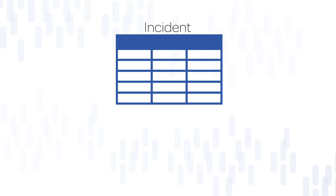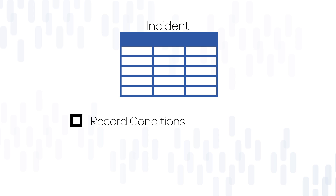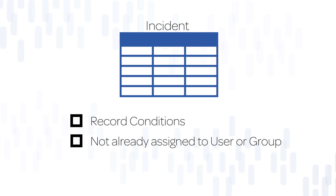For example, you could set record conditions so that a rule applies only if an incident's category is Hardware and the caller is in a certain location. Even if the record conditions are met, assignment rules are only applied if the task record is not already assigned to a user or group.